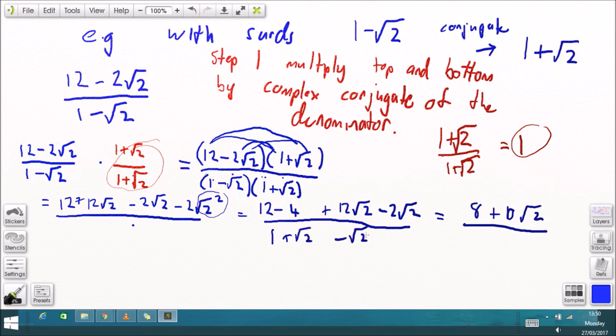I'll do the same thing with the denominator now, 1 plus root 2 minus root 2 minus root 2 squared. Right now these two, the root 2 and the minus root 2 cancel off, leaves us with 1 minus 2